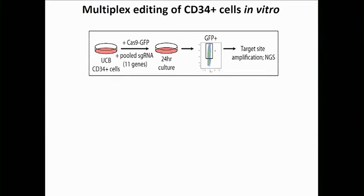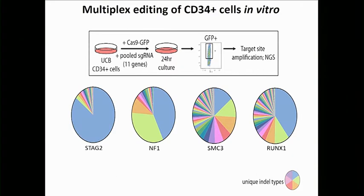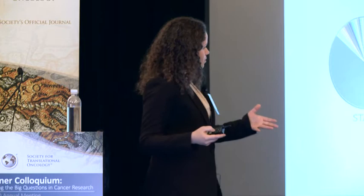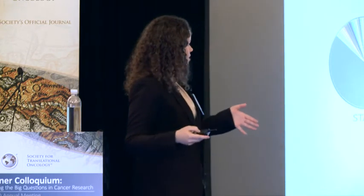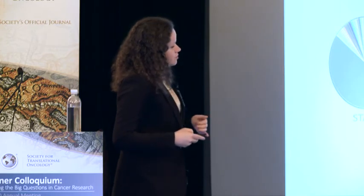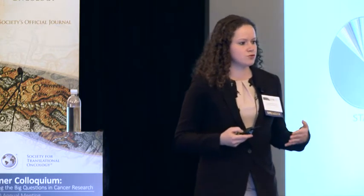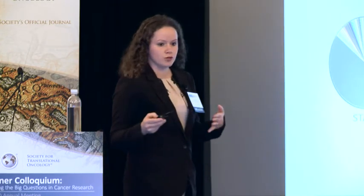The controls included mutations in splicing factors which are not predicted to be loss of function and that we would not expect to see expanded in culture over time. We transduced our pools into umbilical cord blood CD34 cells, cultured them, sorted for the green cells, and examined first populations and then colonies to see if we had any targeting. What you see in these pie charts are unique indel types — insertions and deletions — observed for all the genes. The big picture is that we were indeed able to target every single gene in the pool.